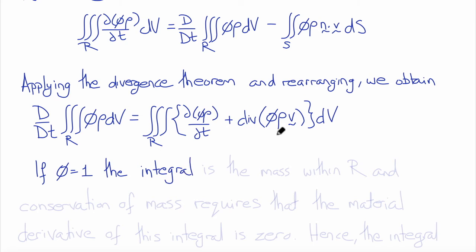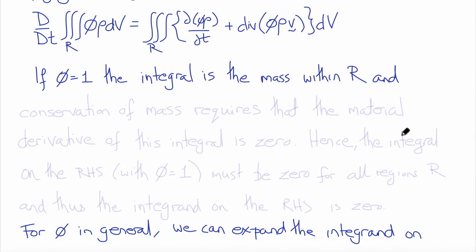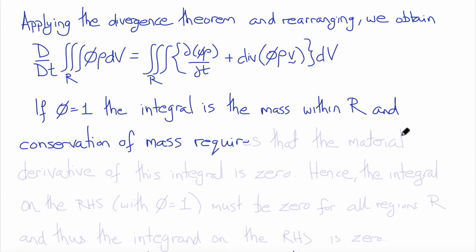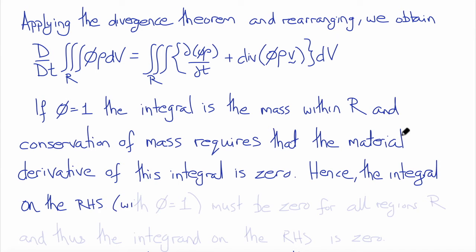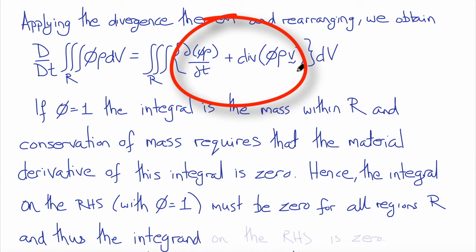Now in the special case when phi is equal to 1, this integral is the mass within R, and conservation of mass requires that the material derivative of this integral is 0. Hence when phi is equal to 1, the integral on the right-hand side must be 0 for all regions R, and thus the integrand itself must be 0.